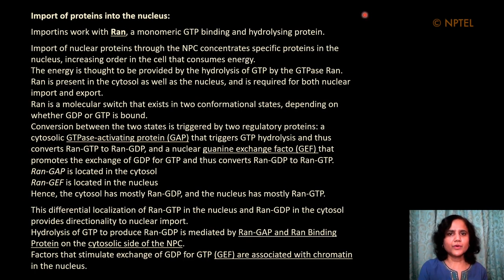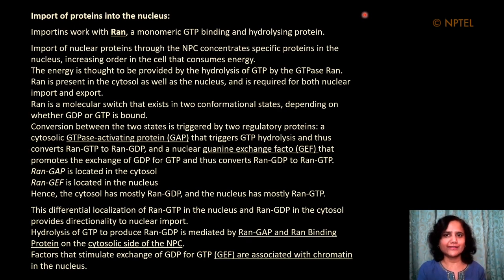The importins work with a protein known as RAN — a monomeric GTP-binding and hydrolyzing protein, a GTPase. Import of nuclear proteins through the nuclear pore complex concentrates specific proteins in the nucleus, increasing overall order in the cell, and as discussed in introductory lectures, it consumes energy. This energy is thought to be provided by the hydrolysis of GTP by RAN. RAN is present in both the cytosol and nucleus and is required for both nuclear import and export.